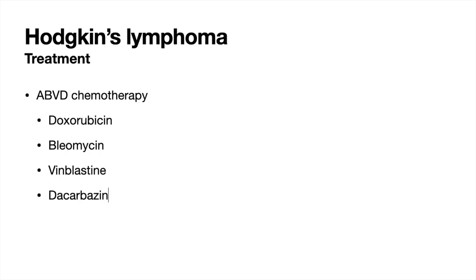The key principles of treating Hodgkin's lymphoma are chemotherapy and radiotherapy. The standard regime used in the UK is ABVD: doxorubicin, bleomycin, vinblastine, and dacarbazine. Radiotherapy can be used as an adjunct. Supportive care is also important — antipyretics for fever, antiemetics for vomiting, and antibiotics if the patient develops an infection.